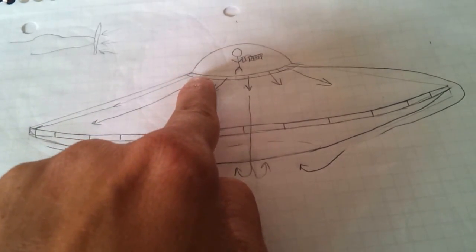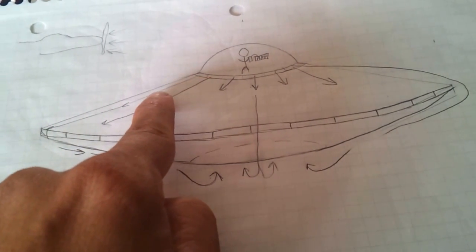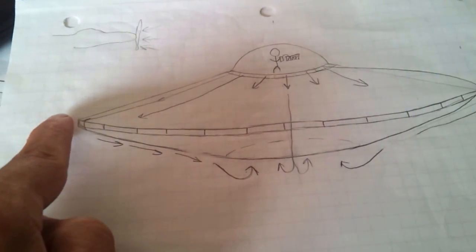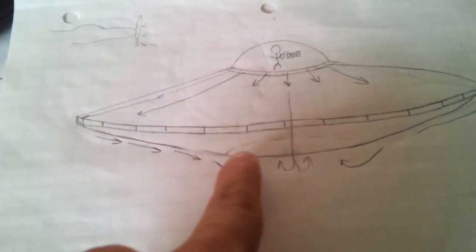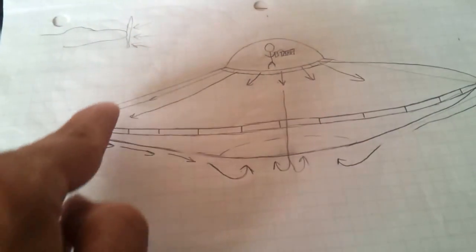It's going up through the saucer and then blowing it out using the Bernoulli effect or the Coanda effect. It's going to send that air and take the path of least resistance, blow it down and around the craft and then back under again. That is going to give it that toroidal flow.